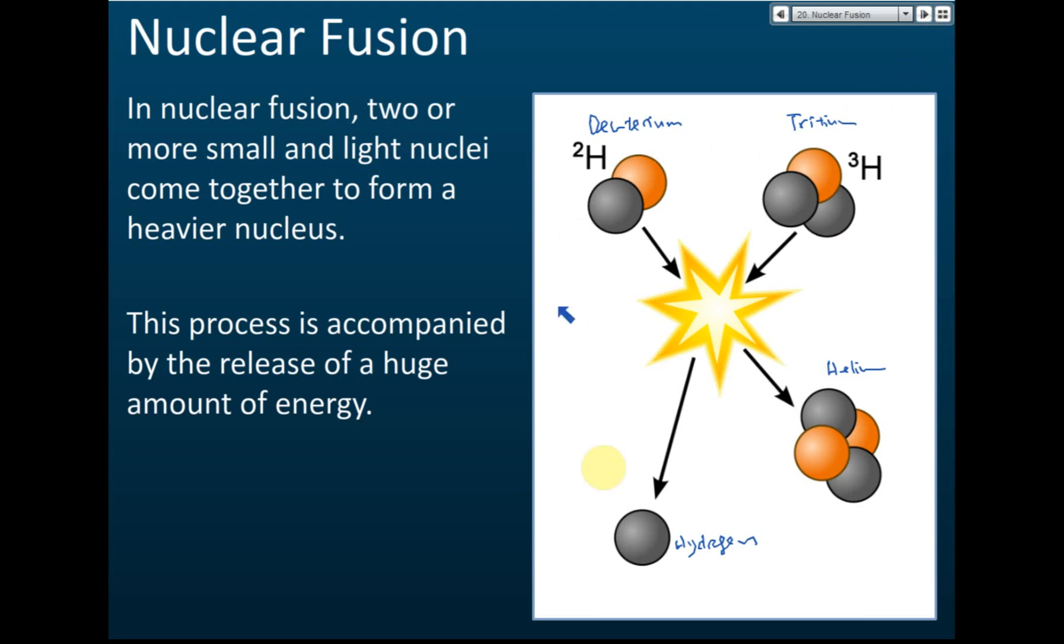This reaction occurs at the star, including the sun. That is how the energy is produced from the sun. You may have wondered how such large amounts of energy come from the sun continuously for billions of years. Where is this energy coming from?